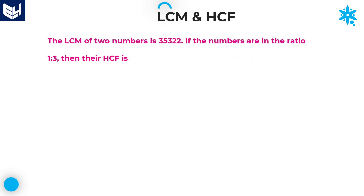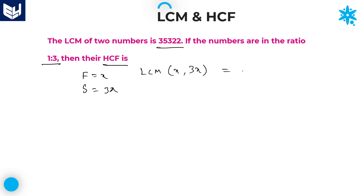Let us move on to the next question. LCM of two numbers is given as 35322. If the two numbers are in the ratio 1:3, then find their HCF. Whenever two numbers' ratio is given as 1:3, let us consider the first number as x and the second number as 3x, where x is the common factor for both numbers. One information is given: LCM of the two numbers — LCM of x and 3x — is equal to 3x, which is given as 35322.